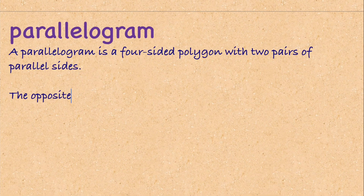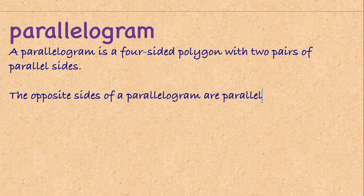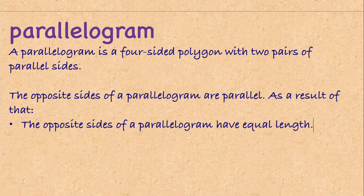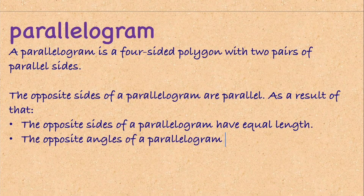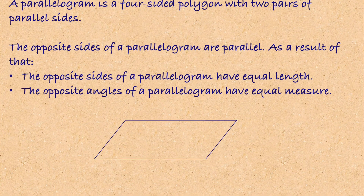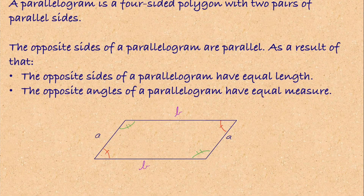A parallelogram is a four-sided polygon with two pairs of parallel sides. The opposite sides of a parallelogram are parallel, and as a result, the opposite sides have equal length. The opposite angles of a parallelogram have equal measure. So in our parallelogram, lengths labeled 'a' are equal, lengths labeled 'b' are also equal, and the two orange angles are the same while the two green angles are also the same.